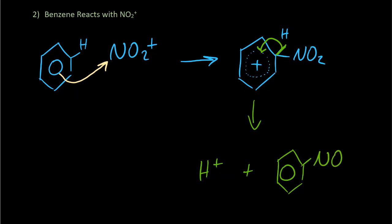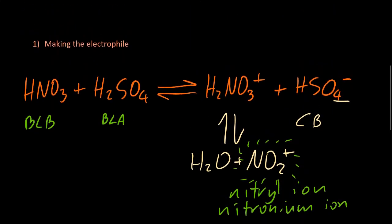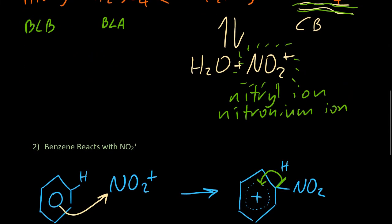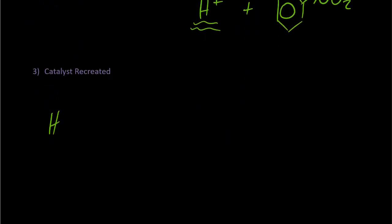Now the sulfuric acid was a catalyst, so what happens is the H+ that came off of the benzene ring is going to react with HSO4- that came out of the first step in the mechanism and regenerate the sulfuric acid. The catalyst is not used up in the process.